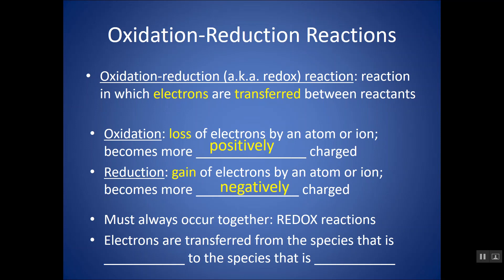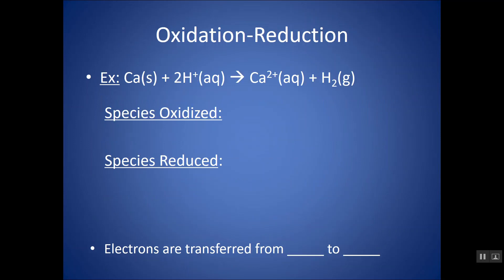It's good to remember that electrons are transferred from the species that's oxidized — the thing that loses or gives up its electrons — to the species that is reduced, or the thing that gains electrons.